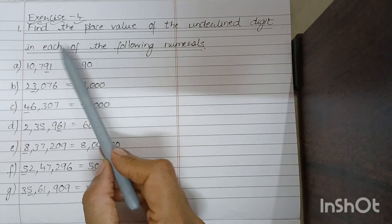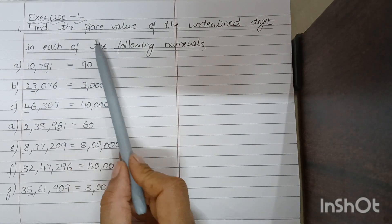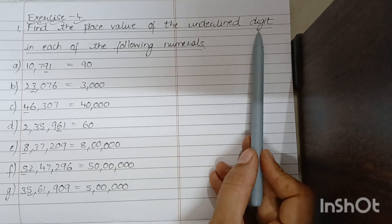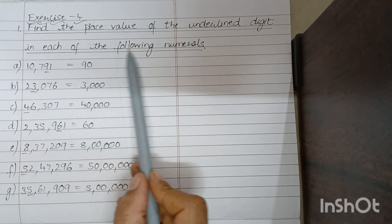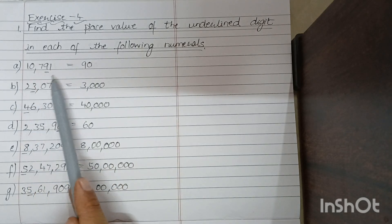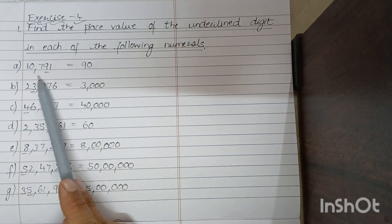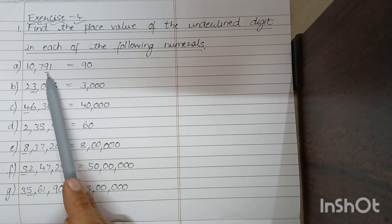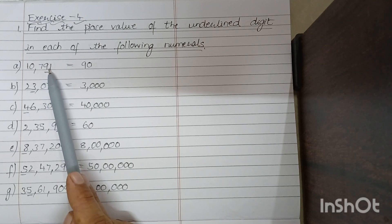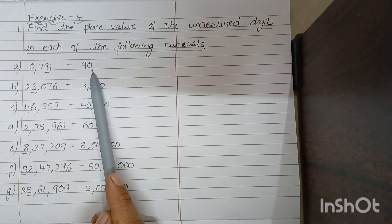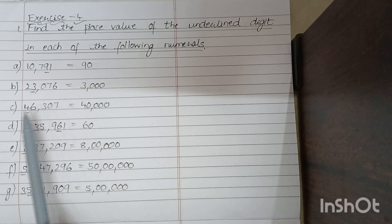Exercise 4. Find the place value of the underlined digit in each of the following numerals. A. 10,791. The underlined digit is 9. This is 1, this is 10, so it will be 90. B. 23,076.